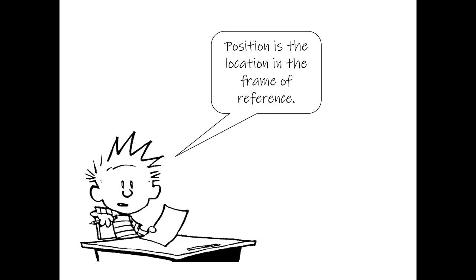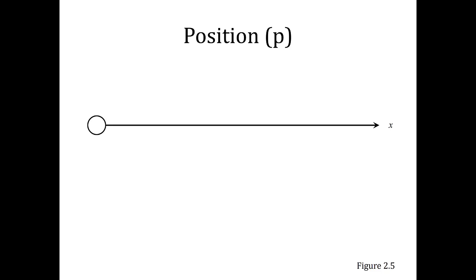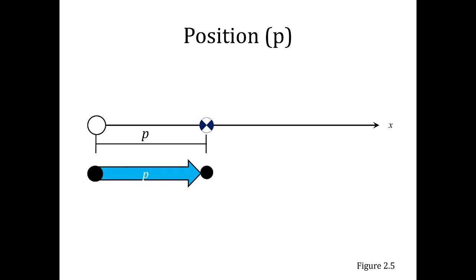Next, we have to establish a position. A position is simply the location within the frame of reference, abbreviated with the letter P. If we have our origin and our direction, the location on that line represents our position. We can draw a vector or an arrow going from the origin to that location — that's referred to as a position vector. The longer that arrow is, the greater in magnitude the position is, or the further away from the origin that position actually is.